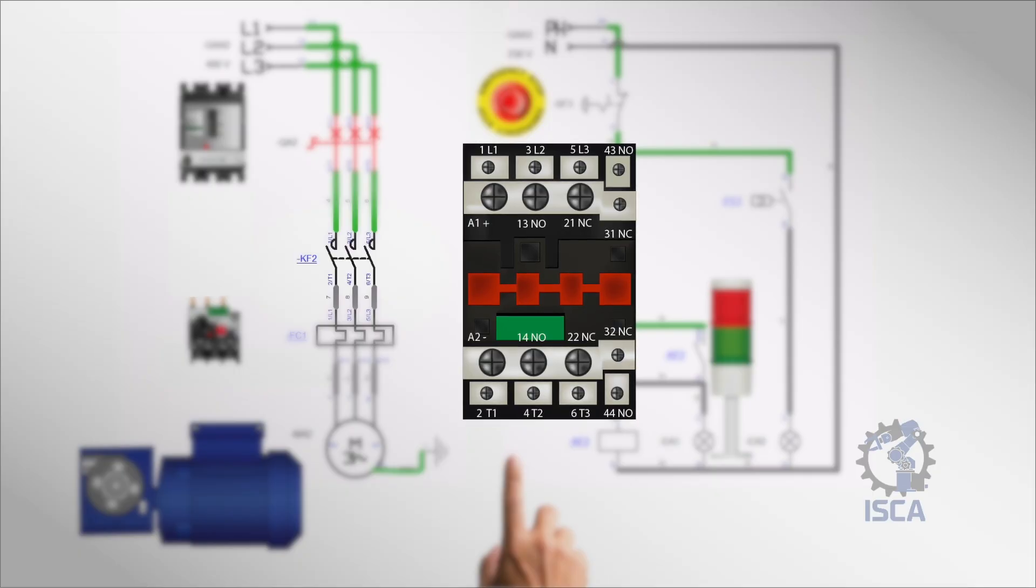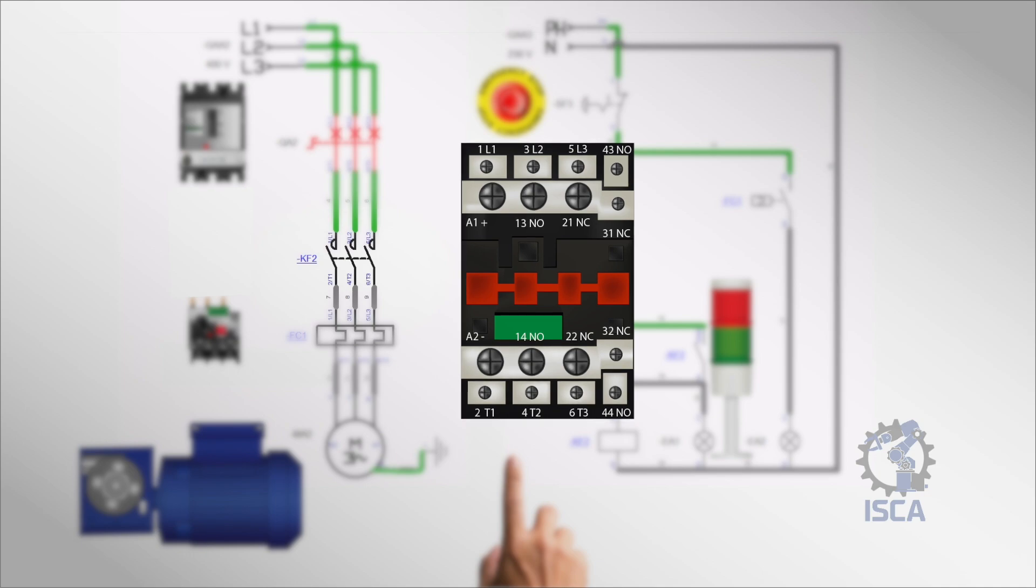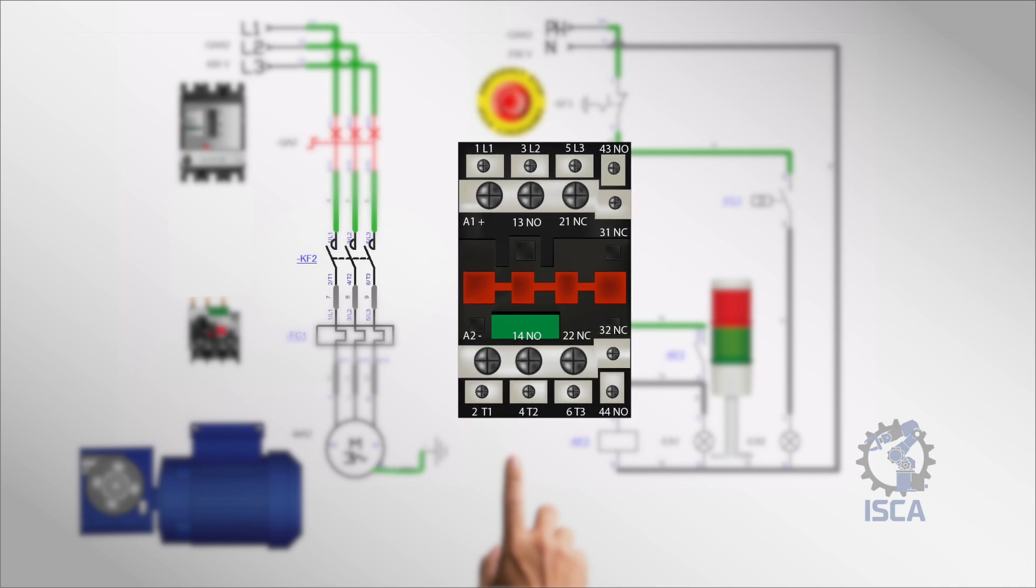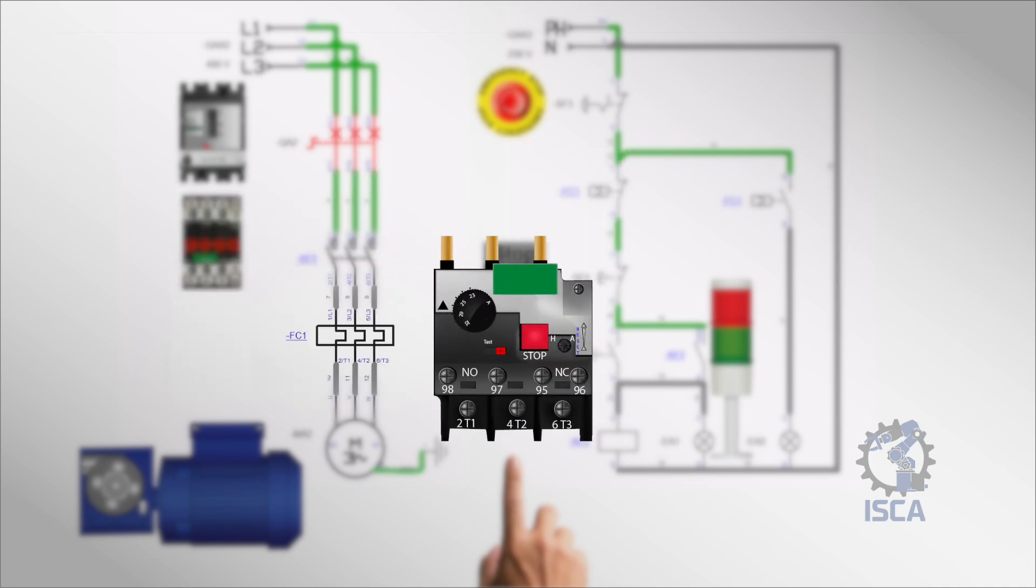Overload relay: this device protects the motor from damage caused by excessive current draw. It monitors the current flowing to the motor and trips if it exceeds a preset limit for a specific duration. Unlike the circuit breaker, which protects against short circuits and severe overloads, the overload relay is tuned to protect against less severe but prolonged overcurrent conditions that can cause motor overheating.